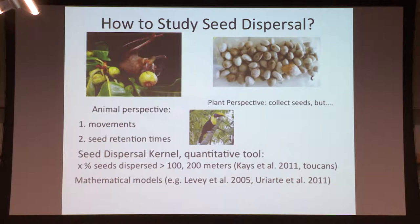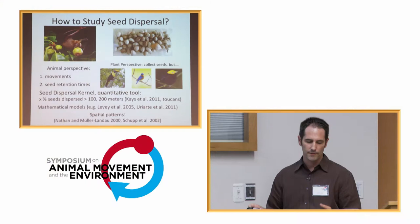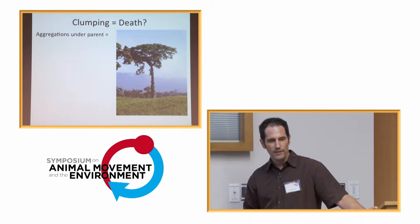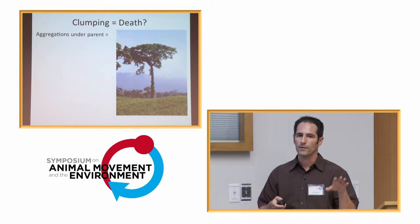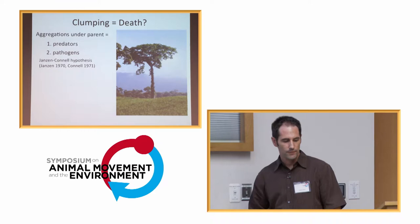These spatial patterns can tell us a lot about how aggregated seeds get, or clumping across a landscape. Aggregations of seeds under parent trees, in conspecifics, can attract species-specific predators and pathogens according to the Janzen-Connell hypothesis, which is prevailing in this literature. It could equal death, so it's kind of a big deal for plant fitness.